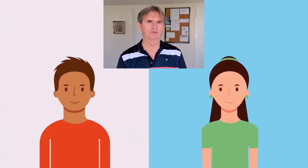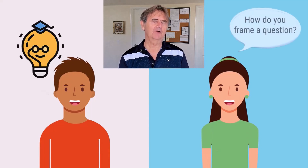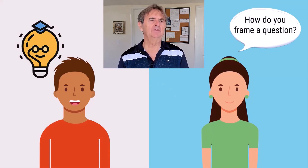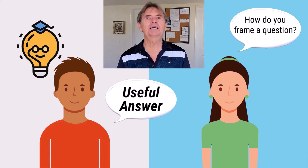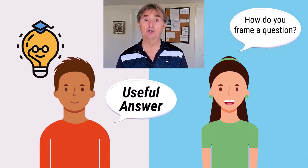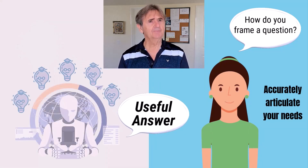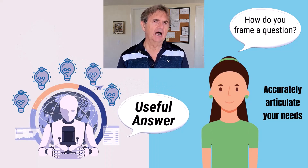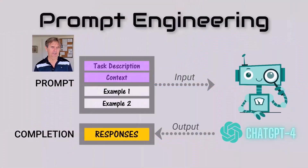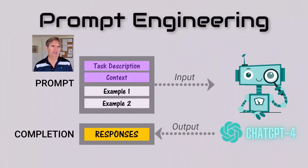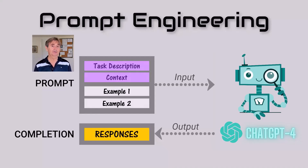Picture engaging in a conversation with a phenomenally well-informed stranger. How do you frame a question to get them to give you a useful answer? The success of your conversation depends on your ability to accurately articulate your needs. Well, the same is true of interacting with ChatGPT. In the world of artificial intelligence, how you frame an inquiry is called prompt engineering, and it's a vital skill for fine-tuning AI interactions to produce the most beneficial outcomes and not just get useless generic responses.